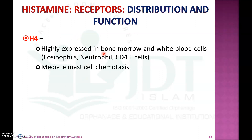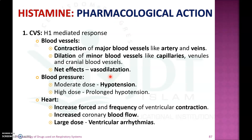The fourth receptor is the H4 receptor, which is highly expressed in bone marrow and white blood cells. It mediates mast cell chemotaxis. These are the different receptors of histamine and their distribution and function.